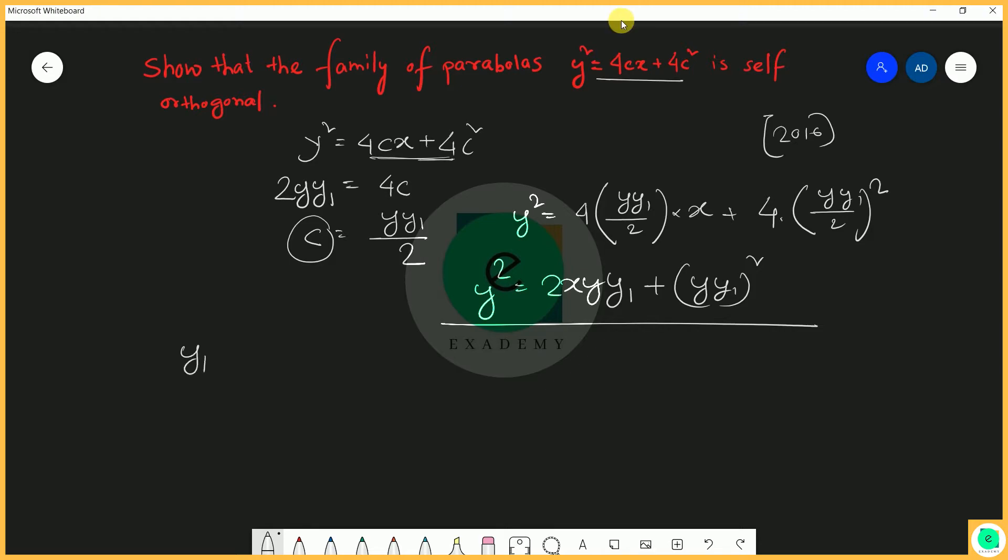We put -1/y₁ in place of y₁. So we substitute into the equation: y² = 2xy × (-1/y₁) + (y × (-1/y₁))².